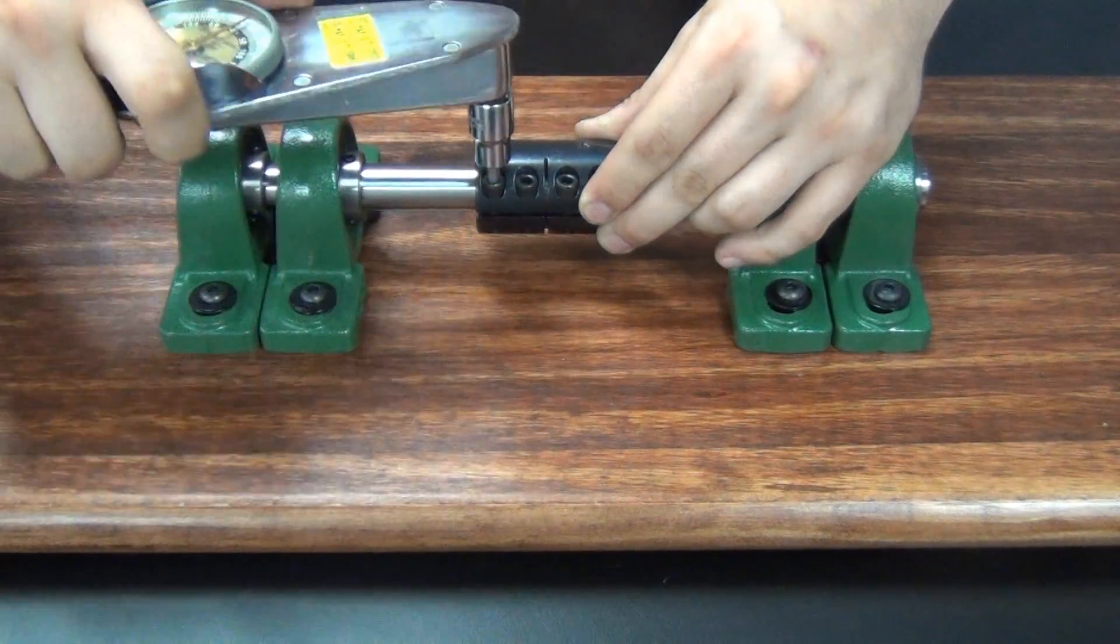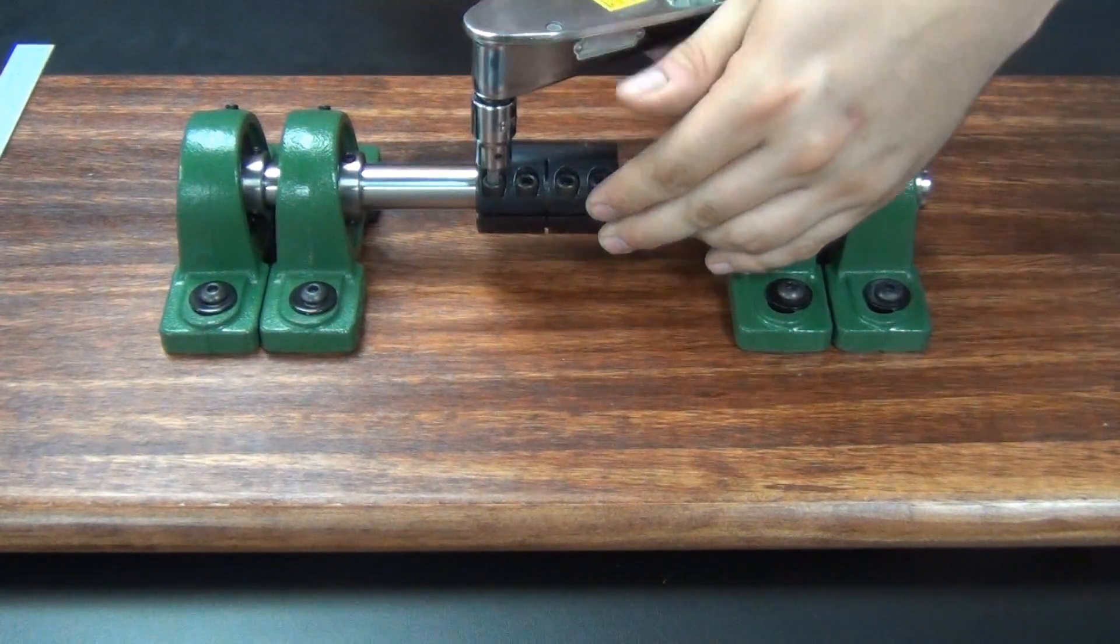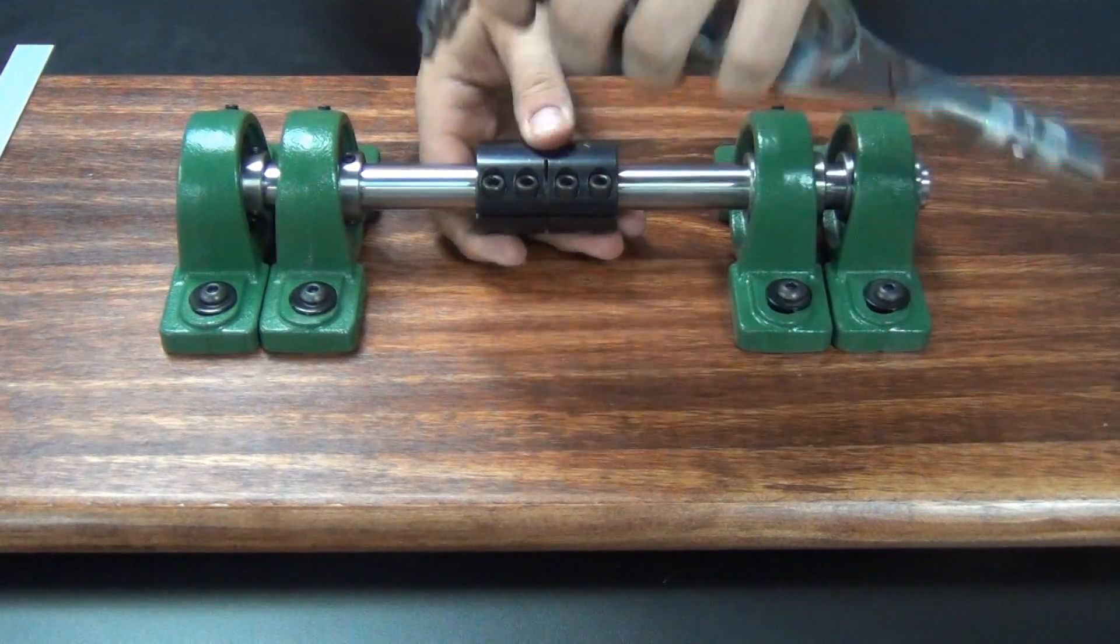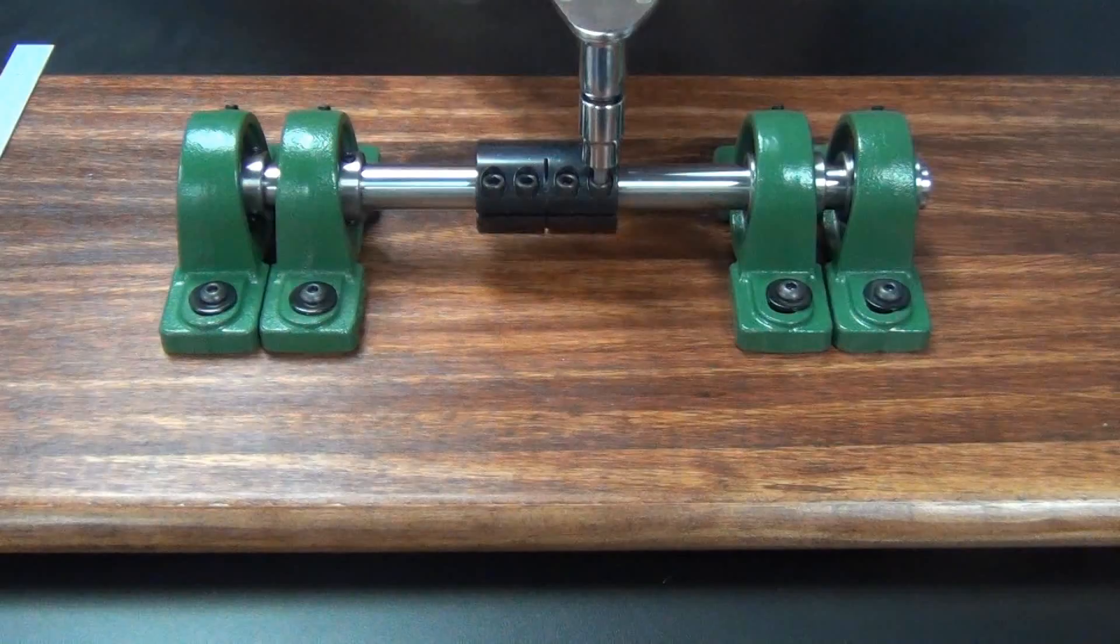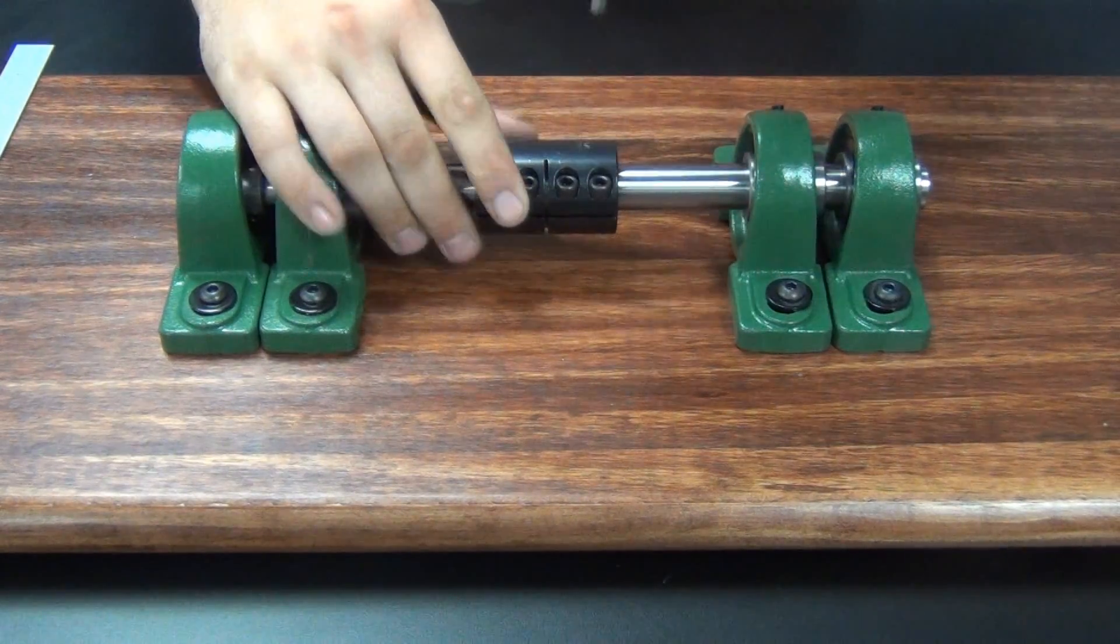Repeat for the outside screws, again tightening to half of the recommended seating torque. Tightening the screws in this pattern distributes the tension more evenly, assuring a tighter fit and the desired holding power.